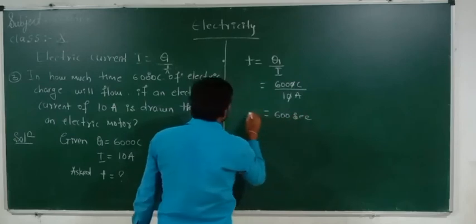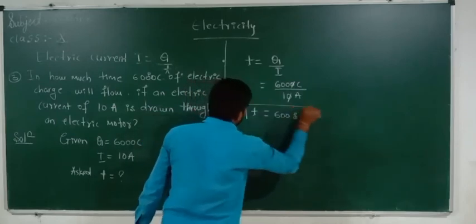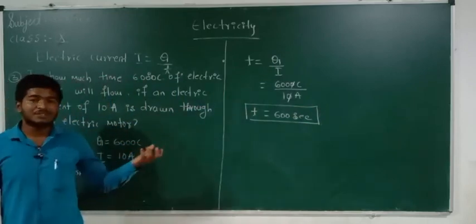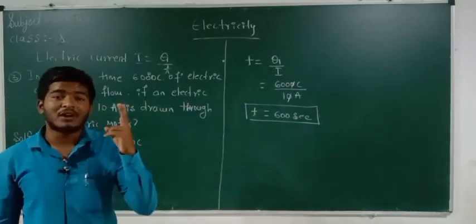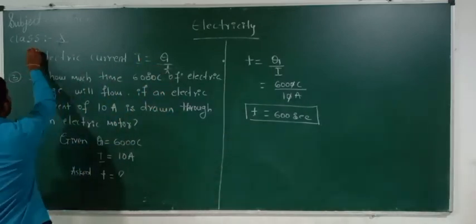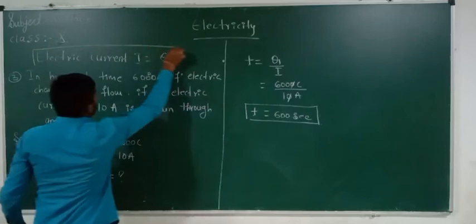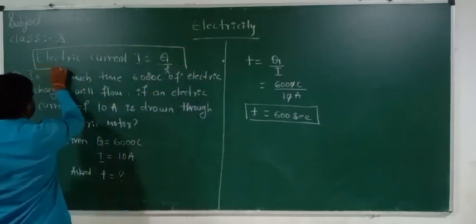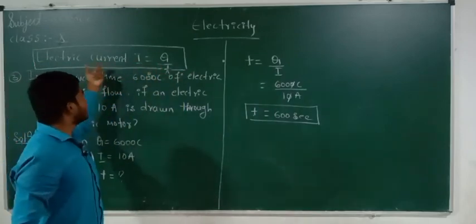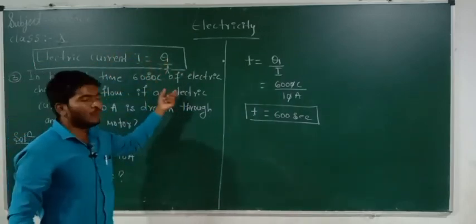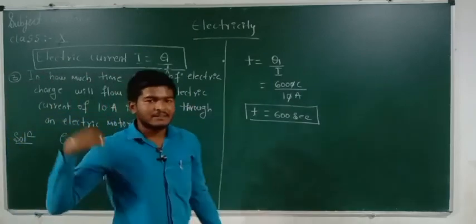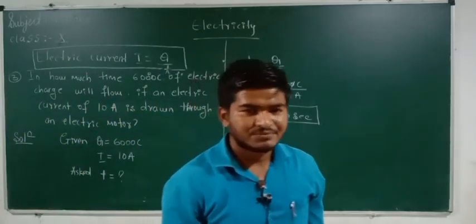These are very simple problems asked in your examination for 2-mark questions. You have to concentrate on this formula: I = Q/T — electric current I equals Q divided by T. In the next class we are going to study the continued part of this session. Thank you.